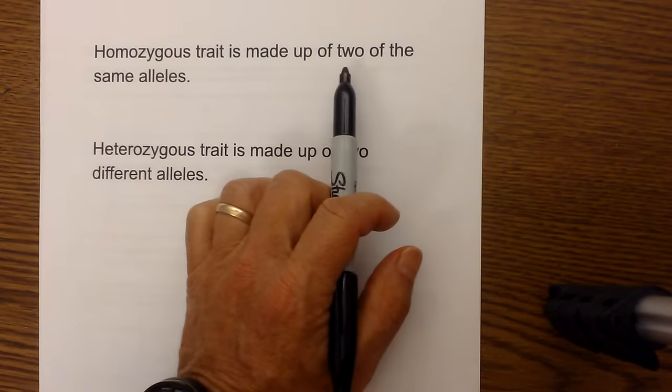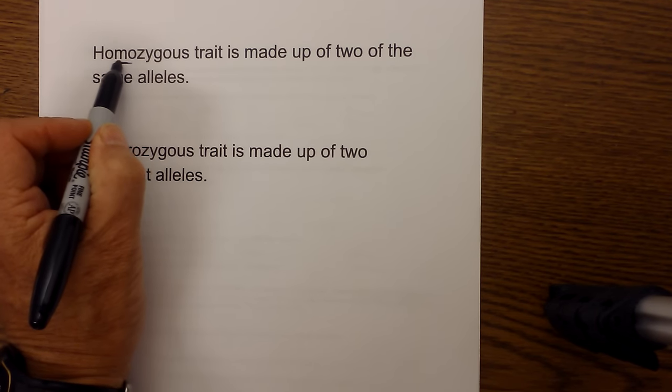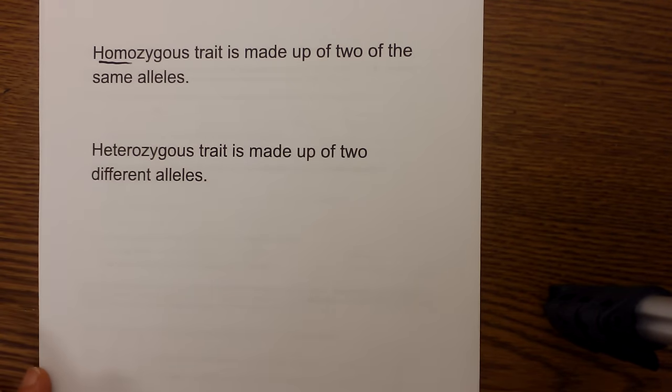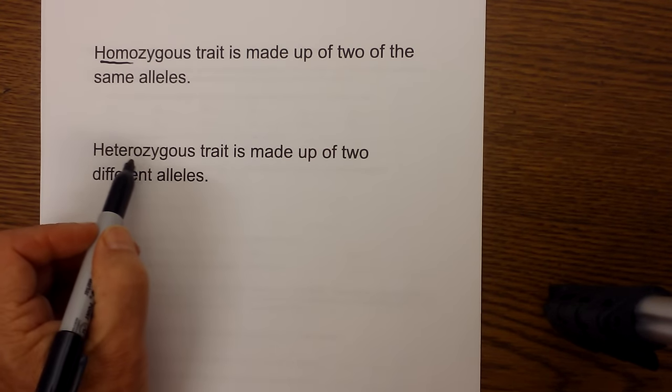Homozygous is a trait made up of two of the same alleles, remember homo meaning the same. And then heterozygous is a trait made up of two different alleles.